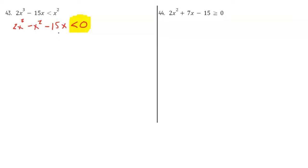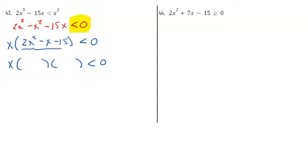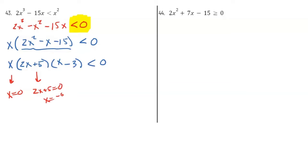The first step is finding my roots or zeros — to do that I'm gonna factor. First I'll factor out an x, giving me x(2x² − x − 15) < 0. Then I continue to factor the quadratic part. I get (2x + 5)(x − 3). So the zeros are: x = 0, from 2x + 5 = 0 → x = −5/2, and from x − 3 = 0 → x = 3.